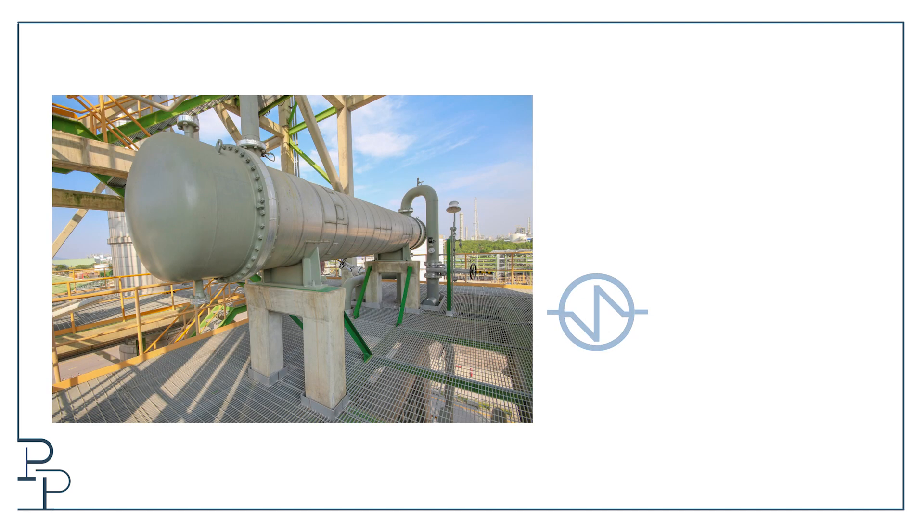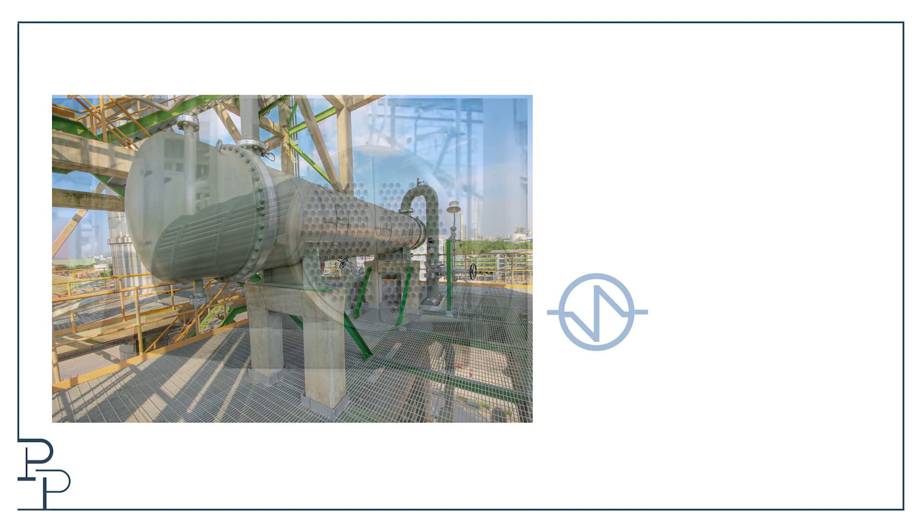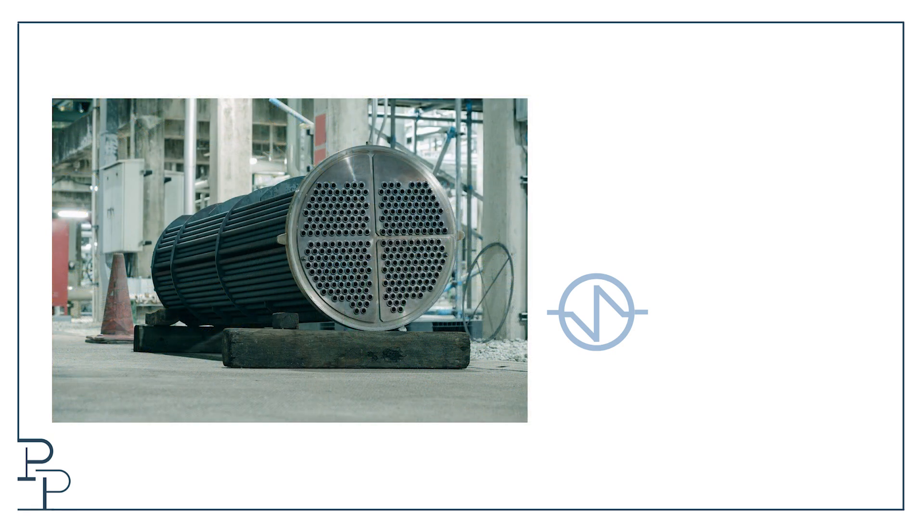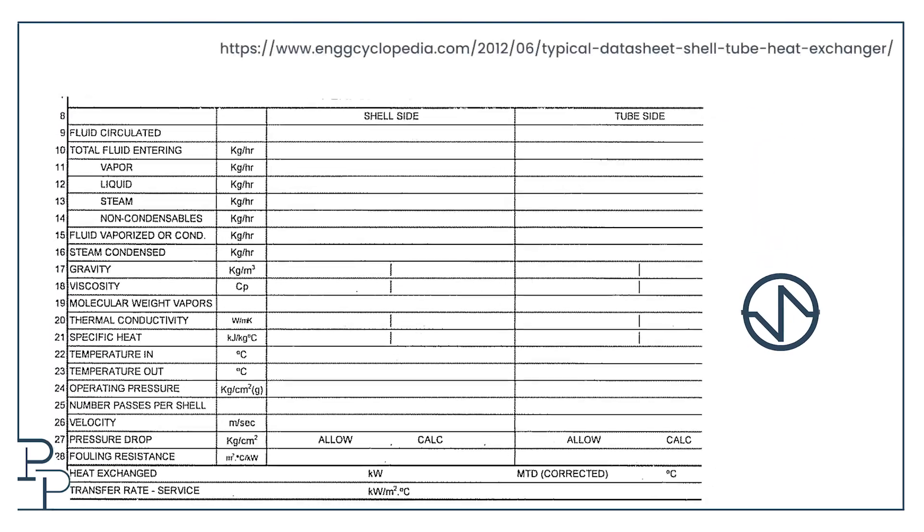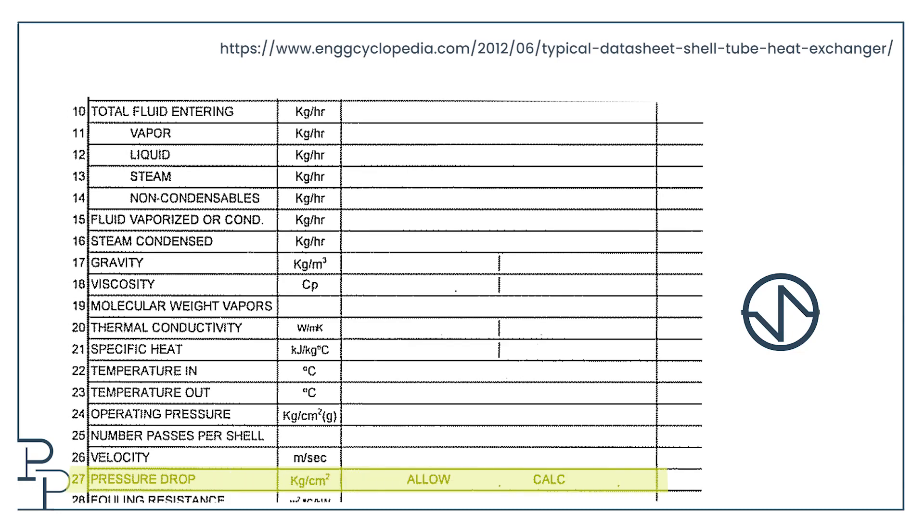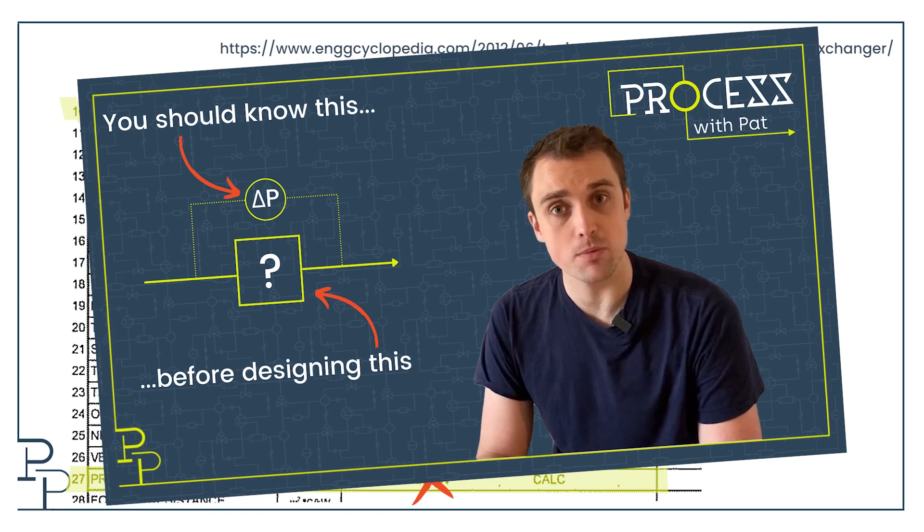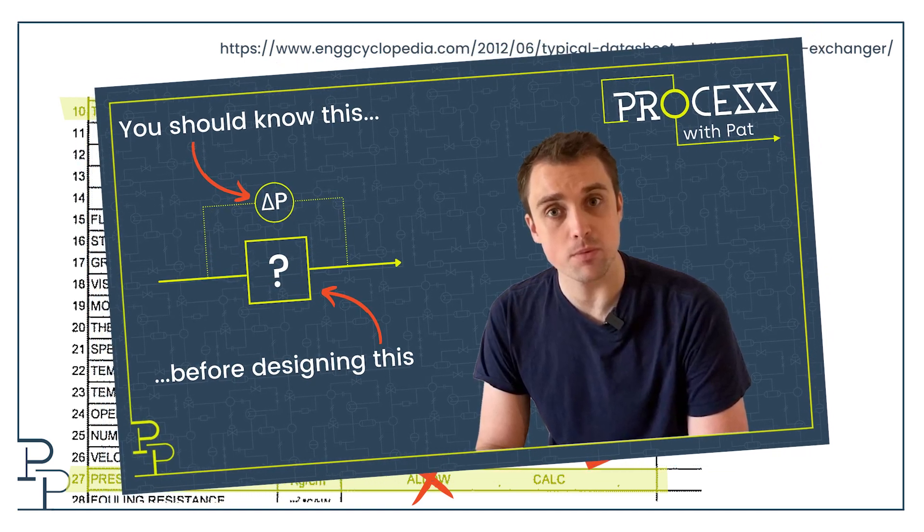Finally we need to know something about the heat exchanger. You could go and model it very rigorously, but if I'm faced with this kind of problem in my day-to-day work, this is how I'd approach it. I'd go look at the data sheet of the heat exchanger and see what is the calculated design pressure drop at the design flow rate. If you want to understand why you use the calculated and not the allowable pressure drop, you should go see my video explaining why you should actually know equipment pressure drop before you design it.